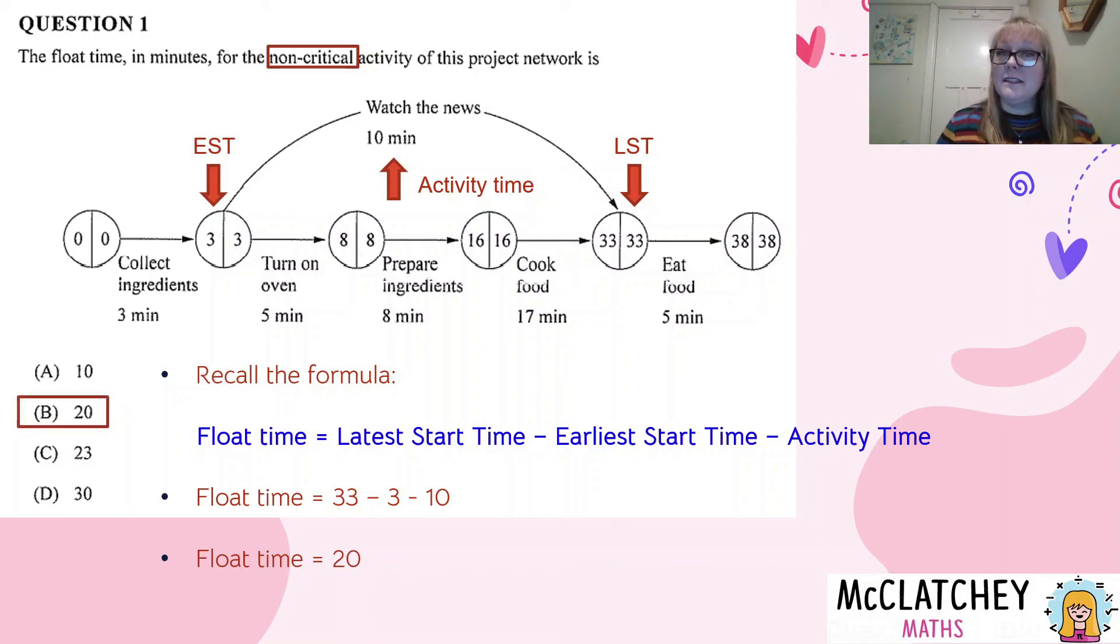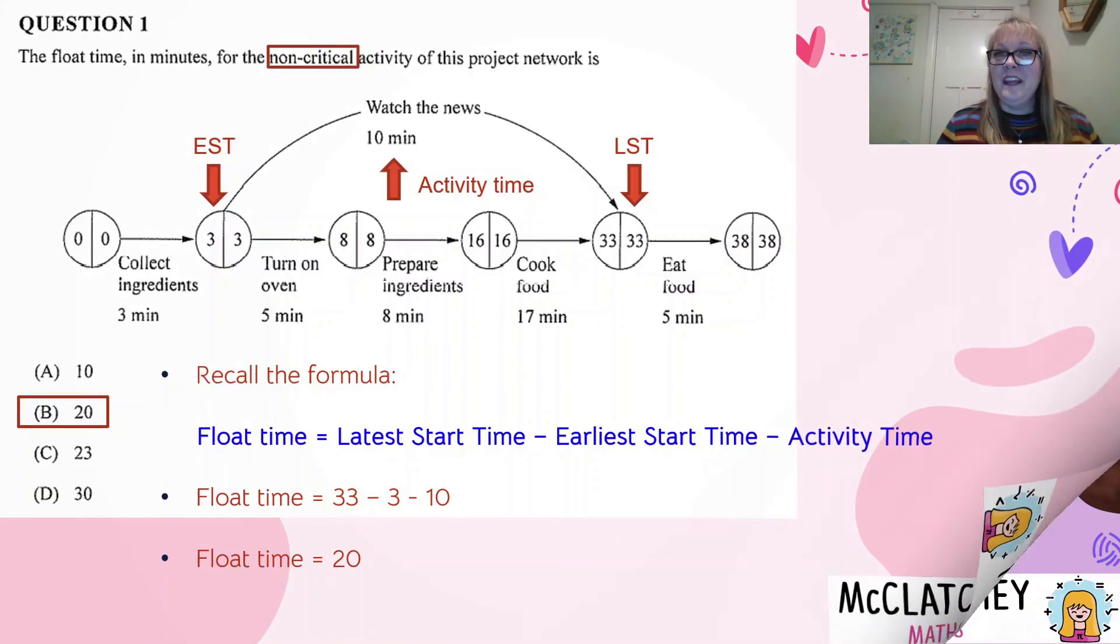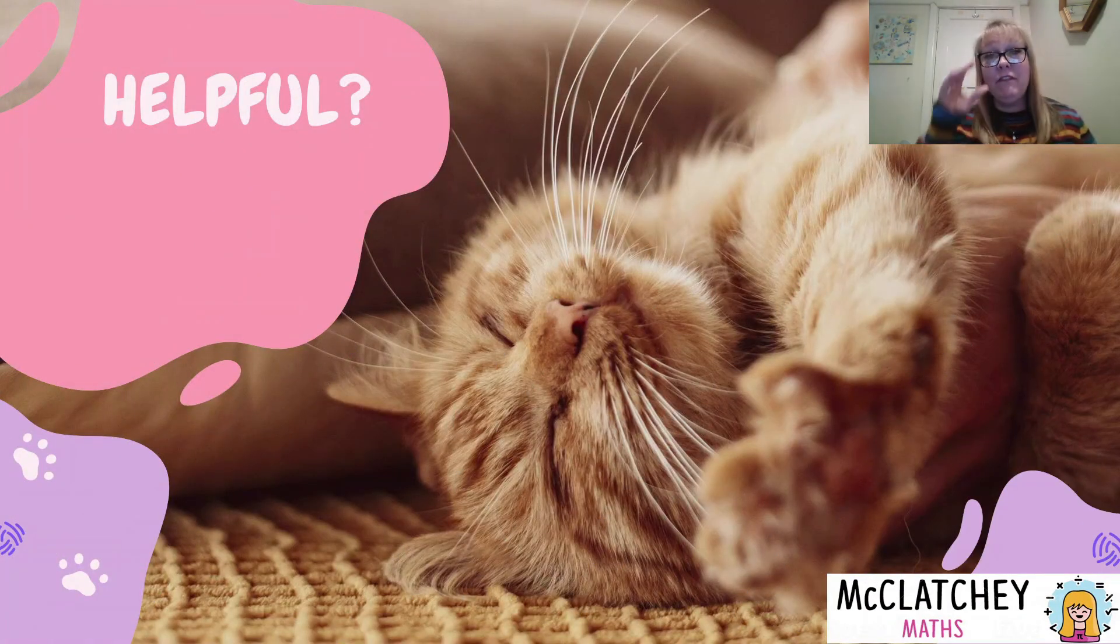And that means our answer is B, 20. And that was the only question on the paper for decision mathematics in the multiple choice section.